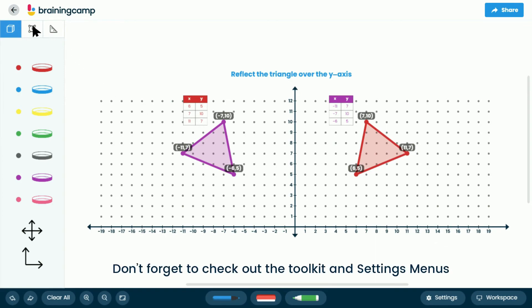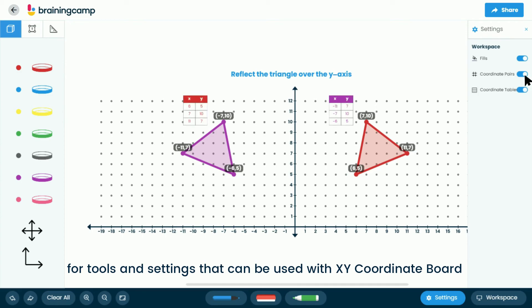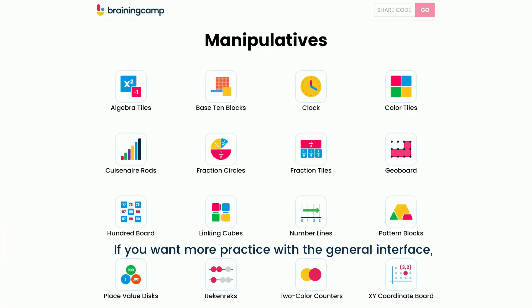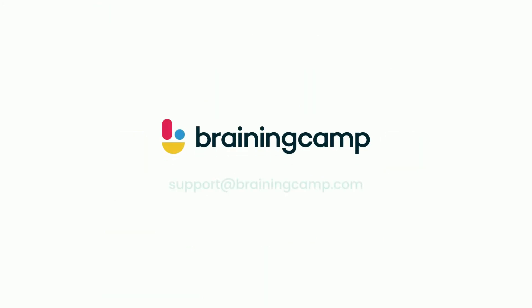Don't forget to check out the toolkit and settings menus for tools and settings that can be used with the XY coordinate board in fun and interesting ways. Now you're ready to use BrainingCamp XY coordinate board. If you want more practice with the general interface, we encourage you to watch the Getting Started with BrainingCamp tutorial video. Remember, each manipulative has its own tutorial video with details specific to each. Let us know if you have any questions.